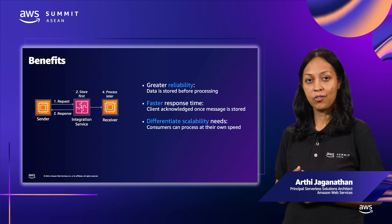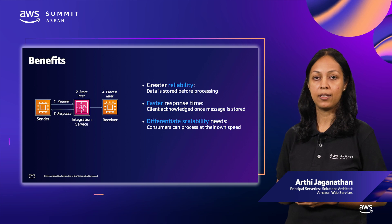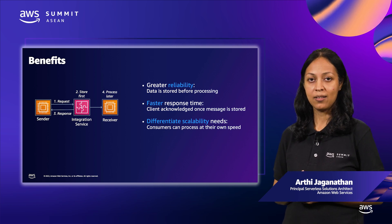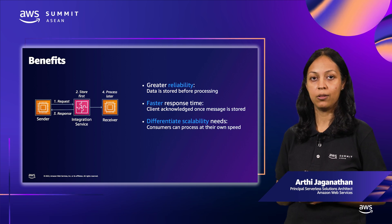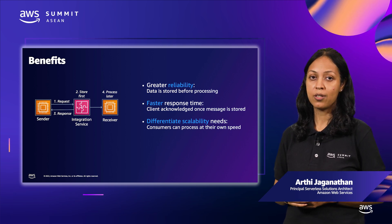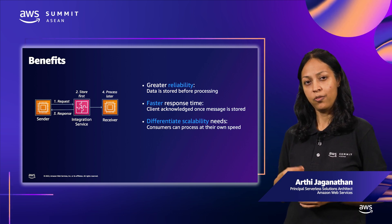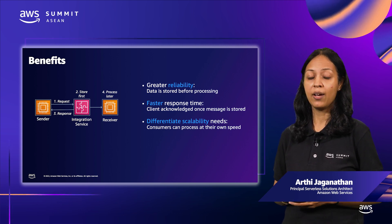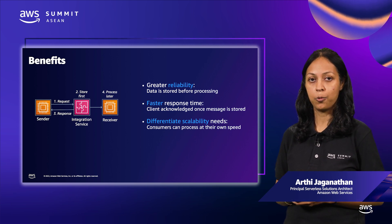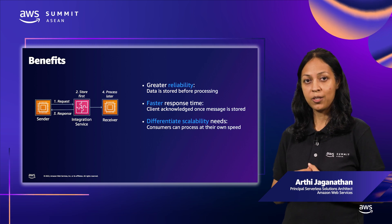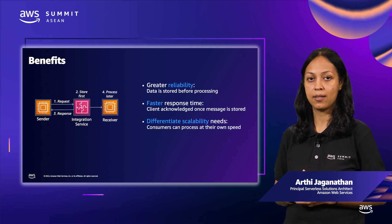Third, the receiver need not process events at the same rate at which they are being sent. Consider an example of an online retail store running a sale. The order microservice may receive thousands of orders per second, but the fulfillment microservice does not have to process at the same rate because shipping an order out at best takes a few hours. This is a great way to optimize cost without compromising the customer SLA.